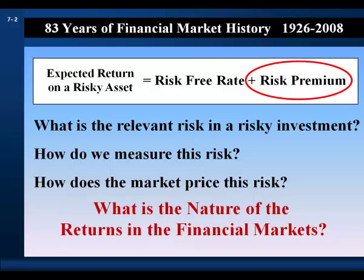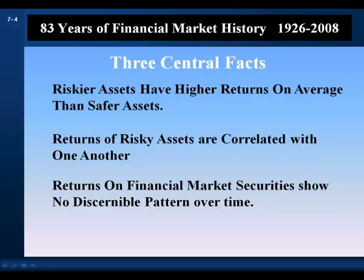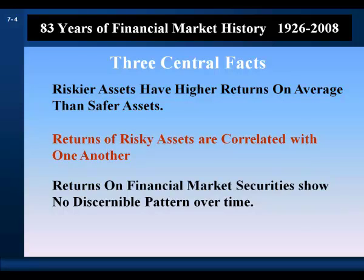We begin by exploring the nature of returns in the financial markets. This involves a statistical analysis of returns over a long period of history — specifically, historical financial returns on various securities traded in U.S. financial markets over an 83-year period, beginning in 1926 and ending in 2008. Three central facts emerge: riskier assets have higher returns on average than safer assets; returns on risky assets are correlated with one another; and returns on financial market securities show no discernible pattern over time.